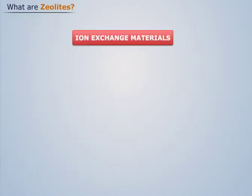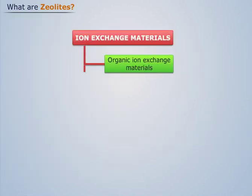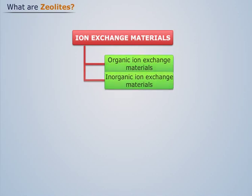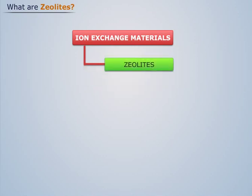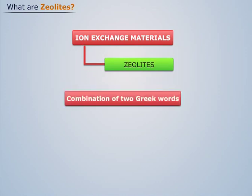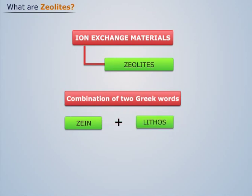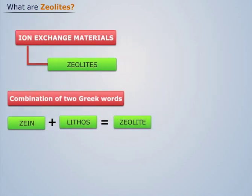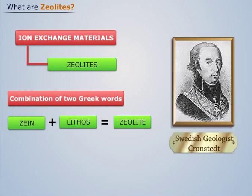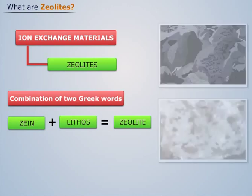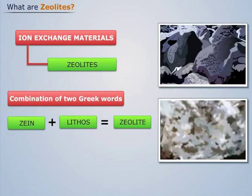There exists a wide variety of organic and inorganic ion exchange materials. Zeolite comprises one such class of ion exchange materials. The term zeolite is derived from two Greek words, zion and lithos, meaning boiling stone. The term was first coined in 1756 by a Swedish geologist, Kronsted, for a group of materials which released their water of hydration as steam.